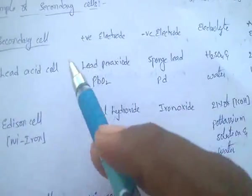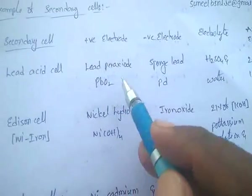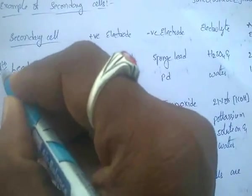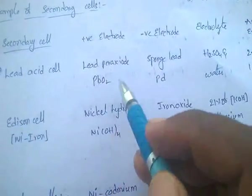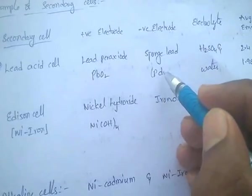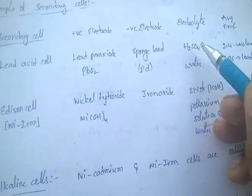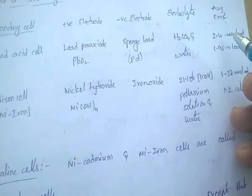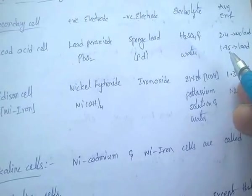Lead acid cell — very, very important: the positive electrode is lead peroxide, the negative electrode is sponge lead, and the electrolyte is H₂SO₄ and water. The average EMF of a lead acid cell is 2.4V at no load and 1.95V at load.